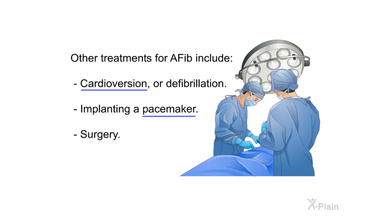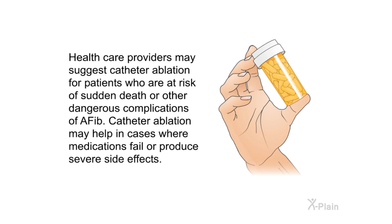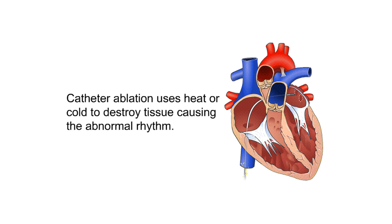Other treatments for AFib include cardioversion or defibrillation, implanting a pacemaker, and surgery. Health care providers may suggest catheter ablation for patients who are at risk of sudden death or other dangerous complications of AFib. Catheter ablation may help in cases where medications fail or produce severe side effects. Catheter ablation uses heat or cold to destroy tissue causing the abnormal rhythm.